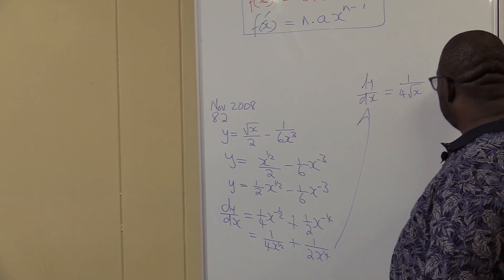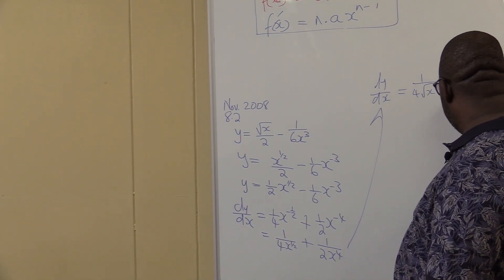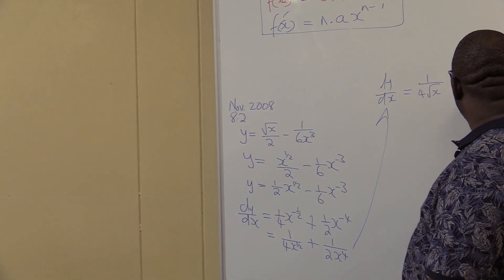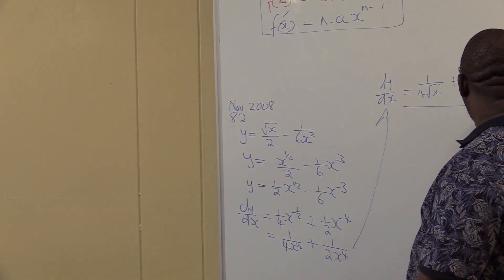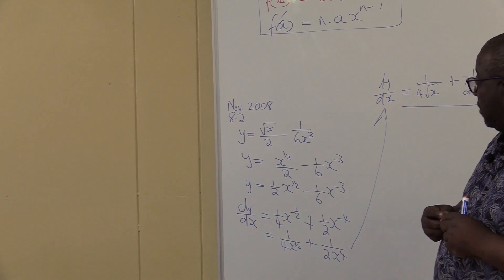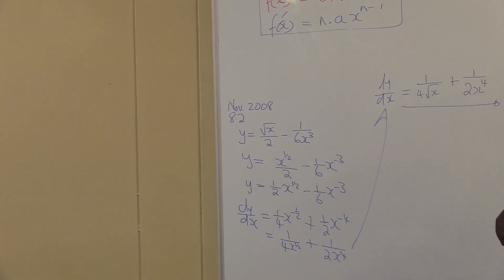So the answer will be 1 over 4 square root of x plus, of course, 1 over 2x to the power 4. This is how I'll go about finding dy dx in that particular form.